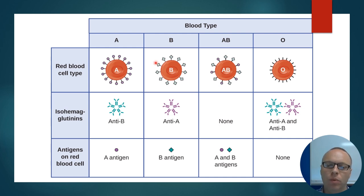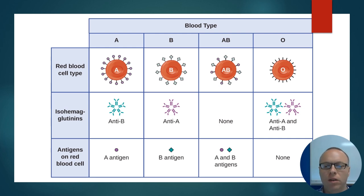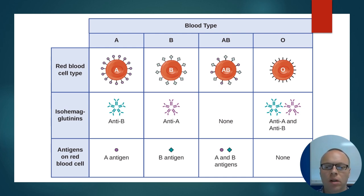Type B blood has the B antigens. Your immune system is fine with your own B antigens, but my immune system would look at them and say 'what is this thing — attack!' Type AB blood has both the A antigen and the B antigen — the worst of both worlds. If you were to give that to me, my immune system would say 'this is messed up, I have to do something about this.' Type O blood has no A or B antigen on the surface, so there is nothing for anybody's immune system to attack.